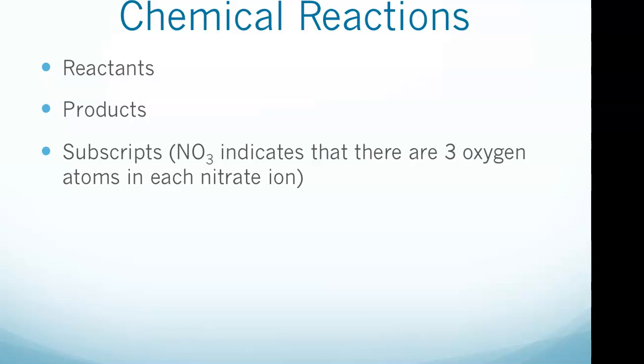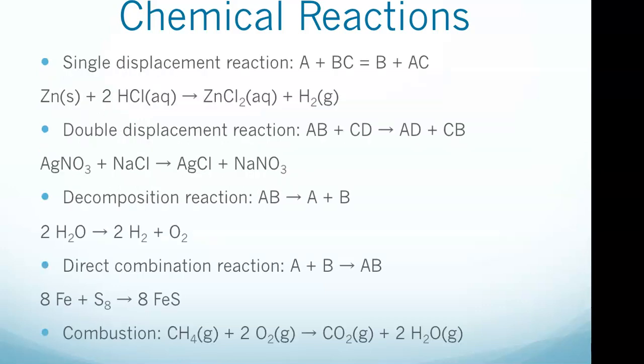As we get into chemical reactions, again, reactants are the inputs in a chemical equation, products are the resulting outputs. Subscripts represent how many atoms or ions are in one molecule. That's important - you just need to be able to know that. Subscripts represent how many atoms or ions are in one molecule. For example, the subscript NO3 indicates that there are three oxygen atoms in each nitrate ion.